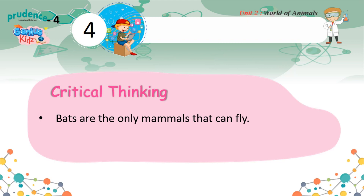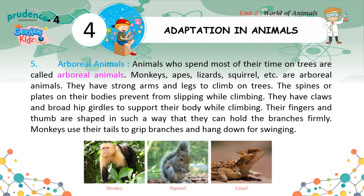Critical Thinking: Bats are the only mammals that can fly. Arboreal Animals. Animals who spend most of their time on trees are called arboreal animals. Monkeys, apes, lizards, squirrels, etc. are arboreal animals. They have strong arms and legs to climb on trees. The spines or plates on their bodies prevent them from slipping while climbing. They have claws and broad hip girdles to support their body while climbing. Their fingers and thumbs are shaped in such a way that they can hold branches firmly. Monkeys use their tails to grip branches and hang down for slinging.